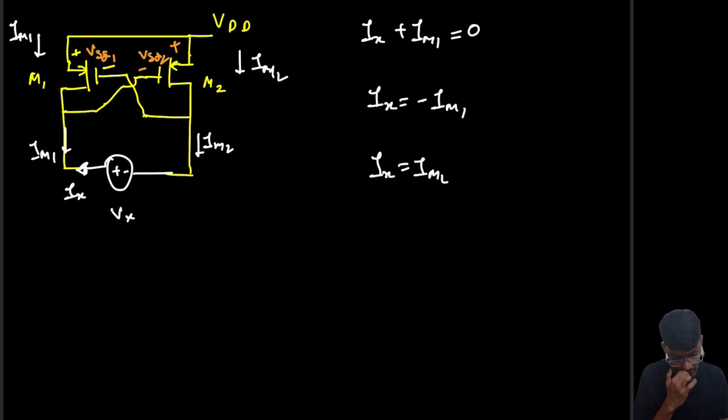We have got these two equations. Next, we can observe that I_M1 is negative of I_M2.